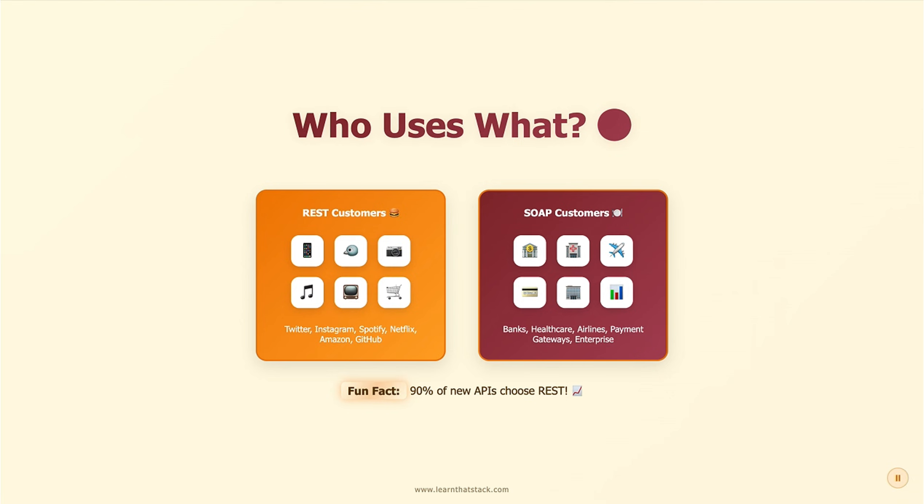So here's the real-world breakdown. Who's eating at REST? Twitter, Instagram, Spotify, Netflix, Amazon, GitHub — basically every modern app you use daily. They need fast, simple, and scalable. Who's still at SOAP? Banks, healthcare systems, airlines, payment gateways — industries where 'oops' isn't an option. They need contracts, guarantees, and legal-level documentation for every transaction. But here's the plot twist: even these enterprise customers are slowly moving to REST. That SOAP restaurant? It's getting emptier every year. 90% of new APIs choose REST. The revolution already happened — REST won.